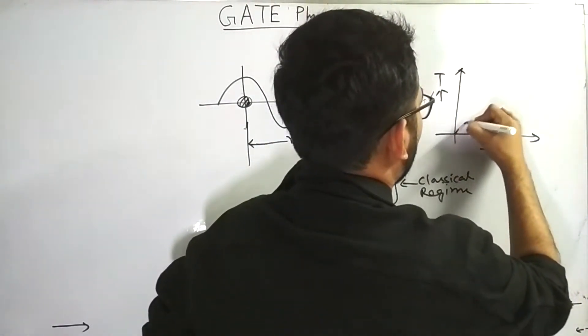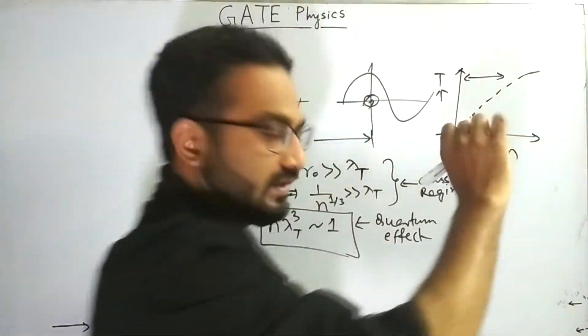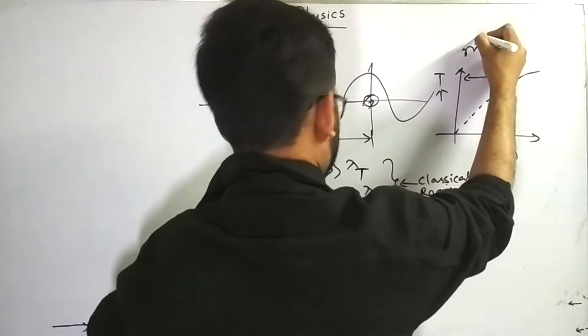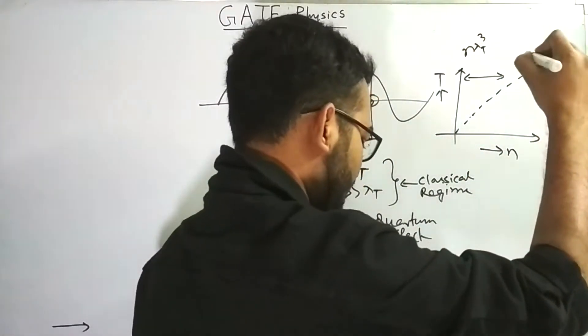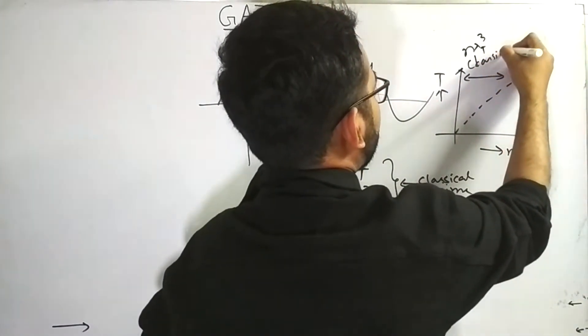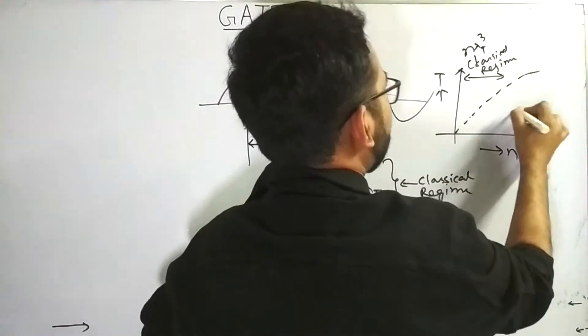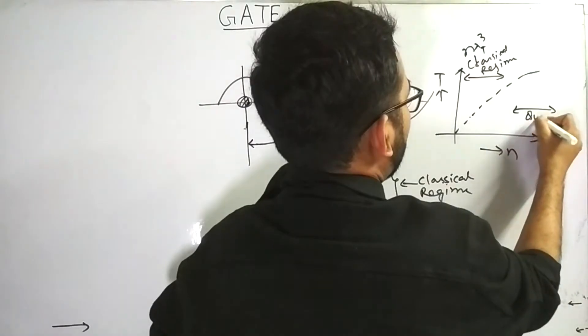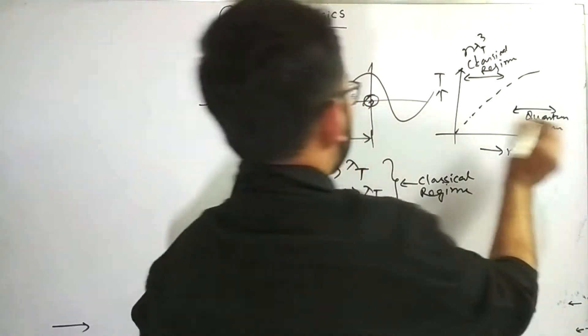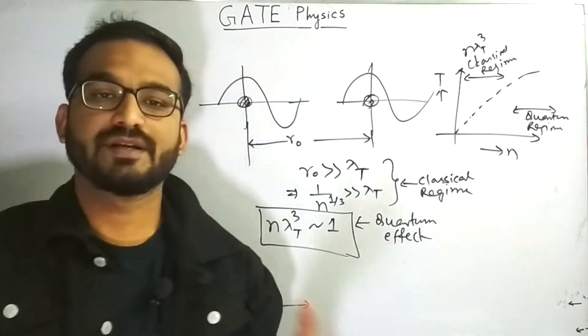And we will get a curve like this. And this region where n into lambda t cube is much less than 1, this is the classical region. And this will be the quantum region. So this concept will be utilized to solve the next problem.